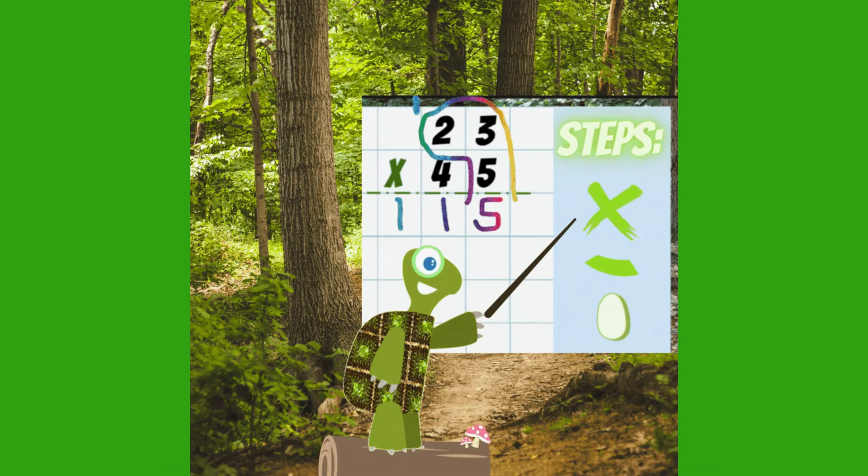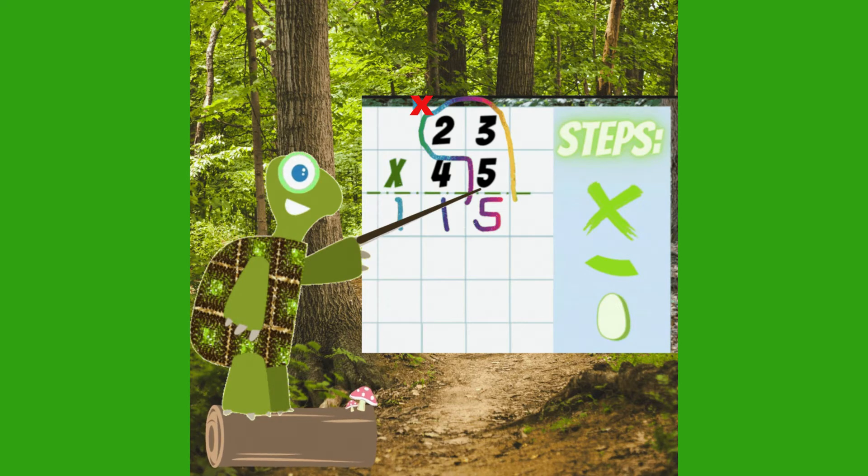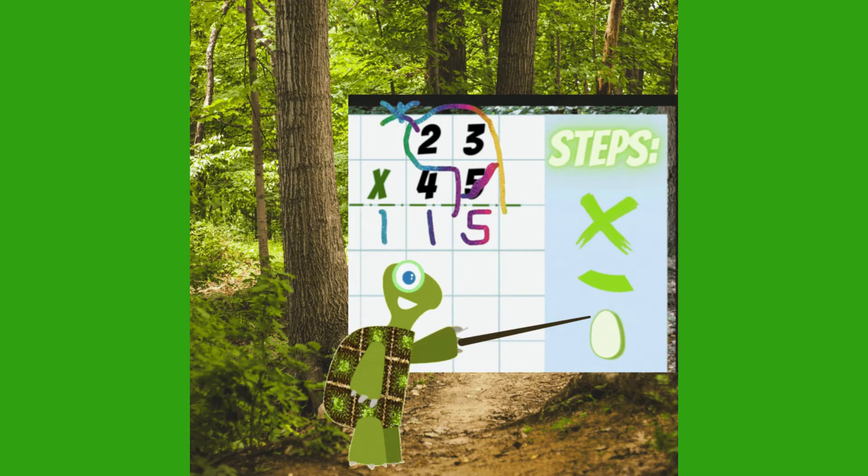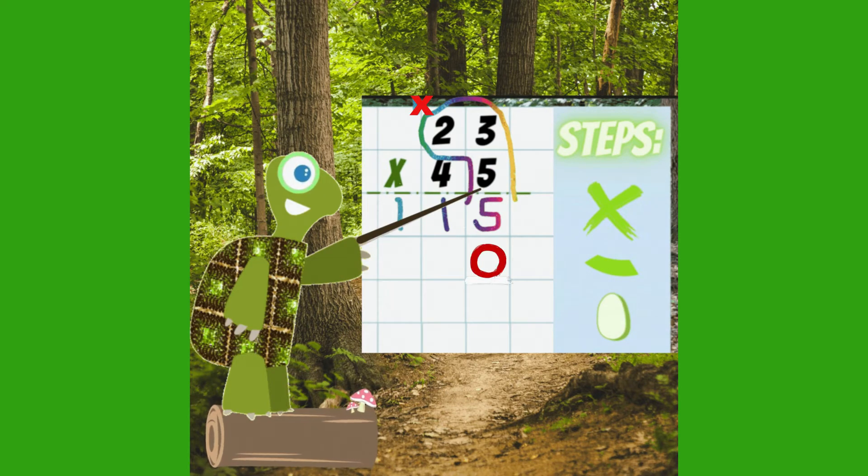Now let's do the three steps with this problem. Step 1: Cross off the one to show that we used it. Step 2: Draw a collar on the turtle's neck to show that we are done multiplying the ones. Last step: Drop an egg under the collar. This means put a zero in the ones place as a placeholder.